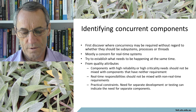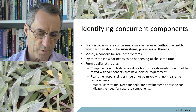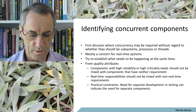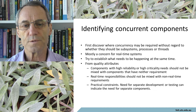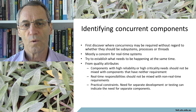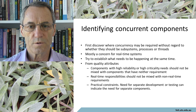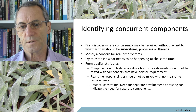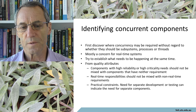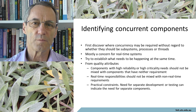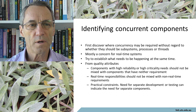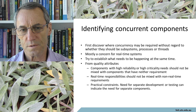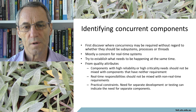When identifying concurrent components, we first discover where concurrency may be required, without regard to whether it should be a subsystem, a process, or a thread. We want to know when things have to be executing at the same time. Probably the best example is anything that has to monitor the system — that would probably be a separate component.